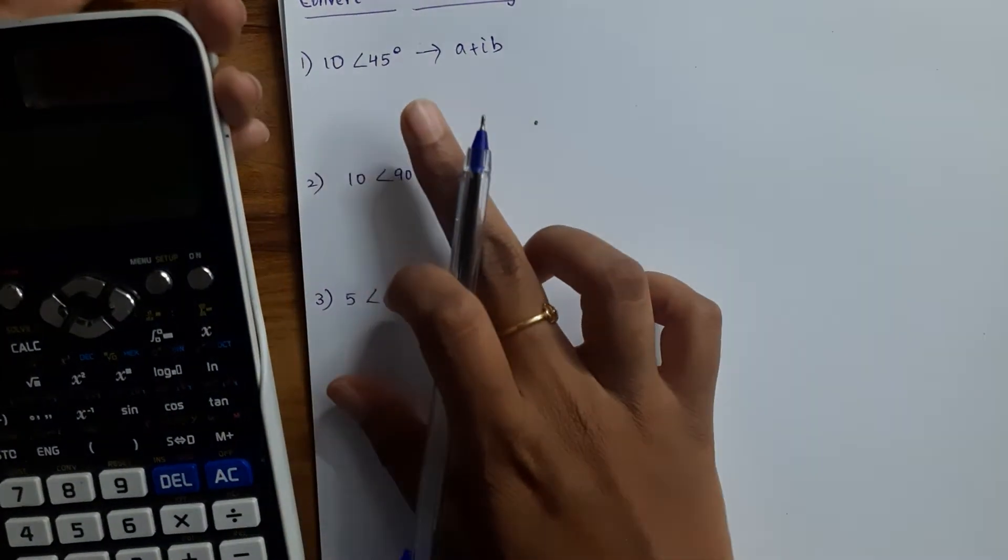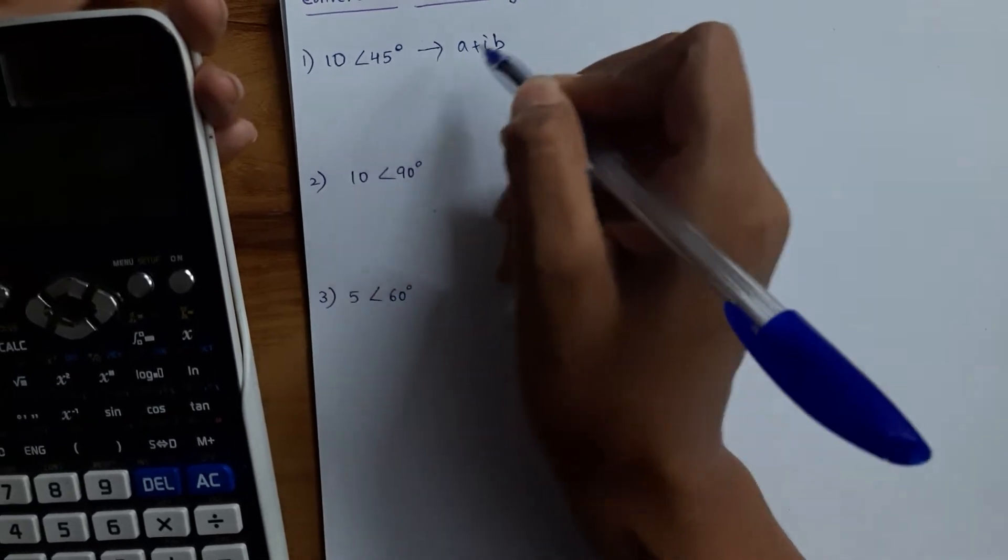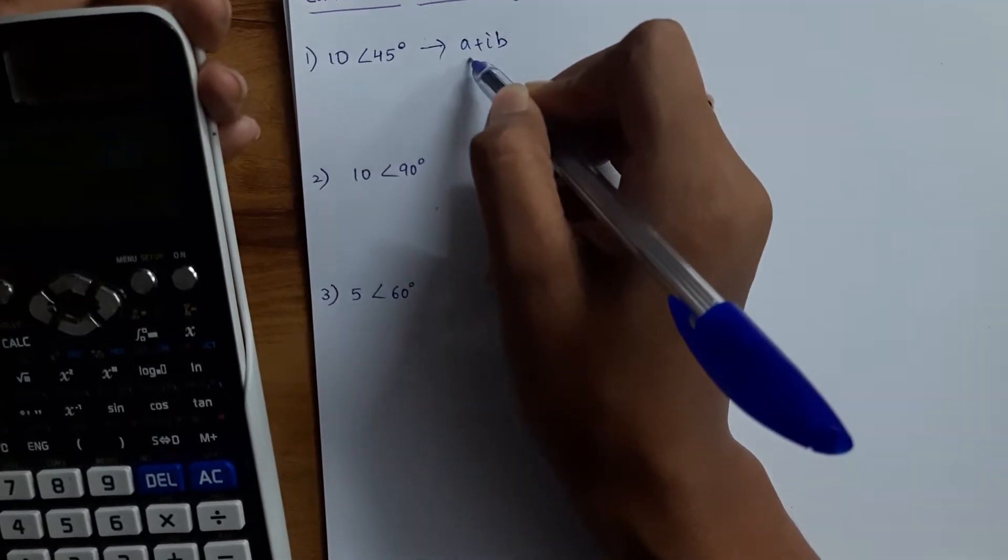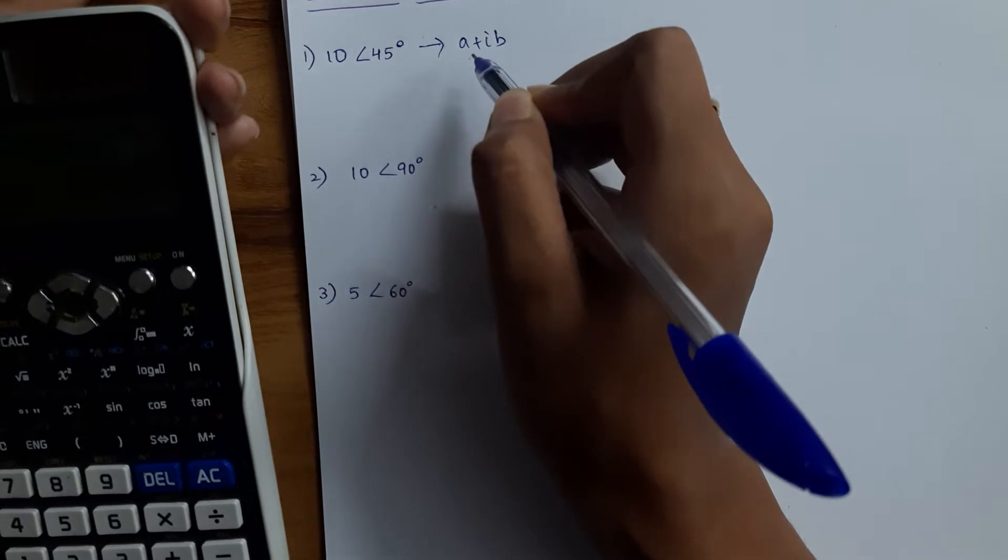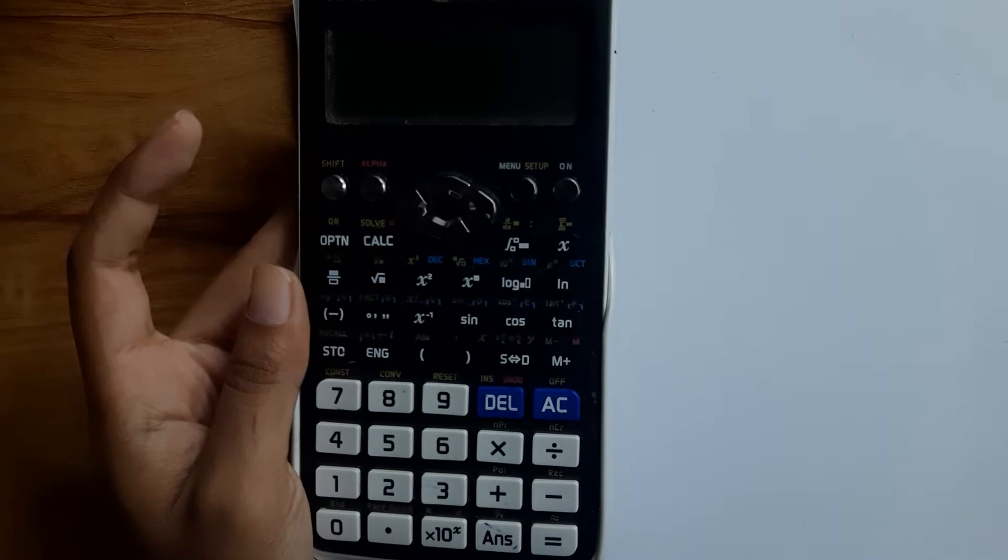So we are going to see how to convert it into rectangular form, that is a plus ib form. We are going to use our scientific calculator.